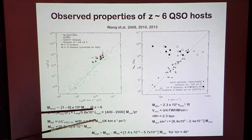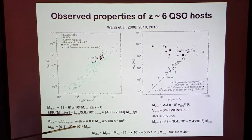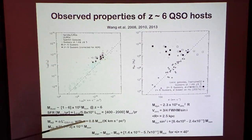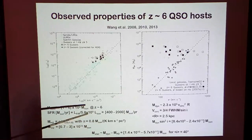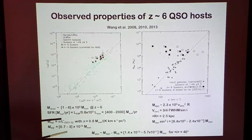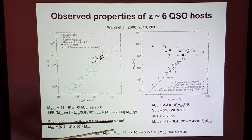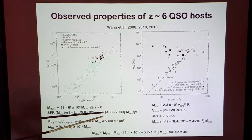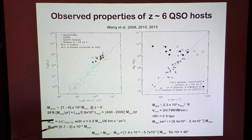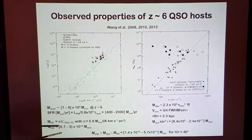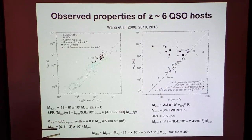Star formation rates, once you have corrected for the AGN contamination, are derived from a Kennicutt relation assuming a standard Salpeter initial mass function. H2 masses are derived from the CO luminosity assuming standard conversion factors for starburst galaxies, and are of order 10^10 solar masses.